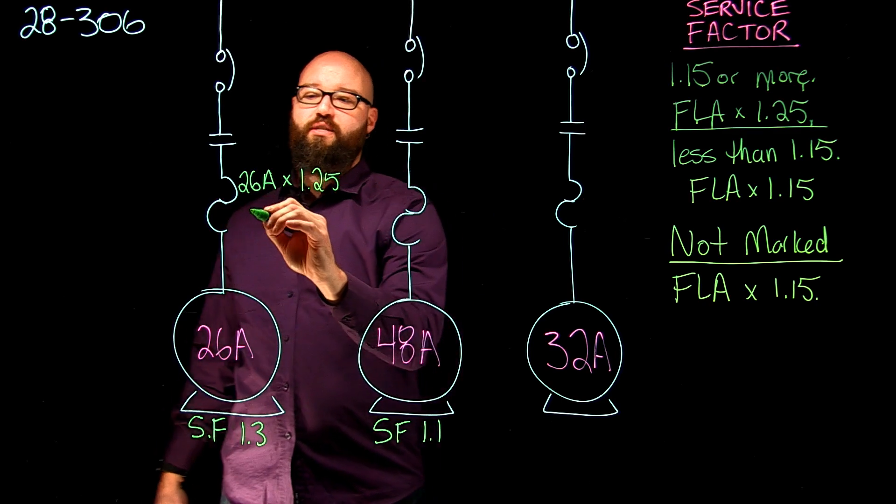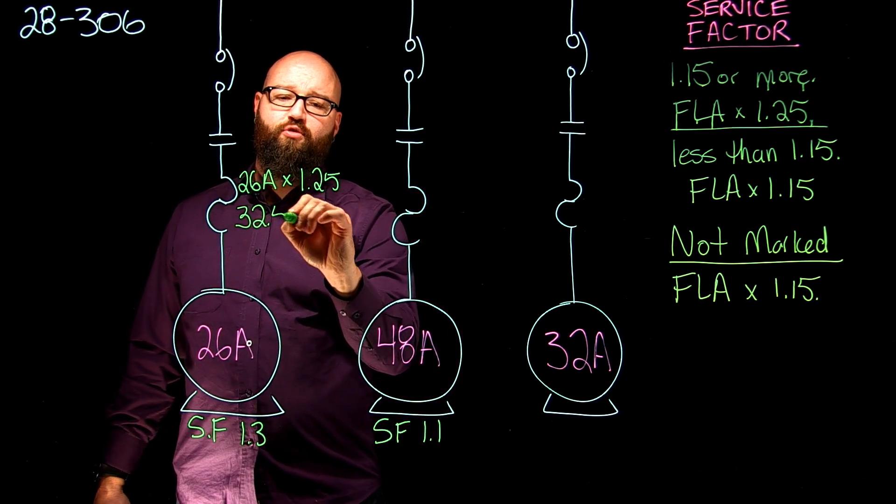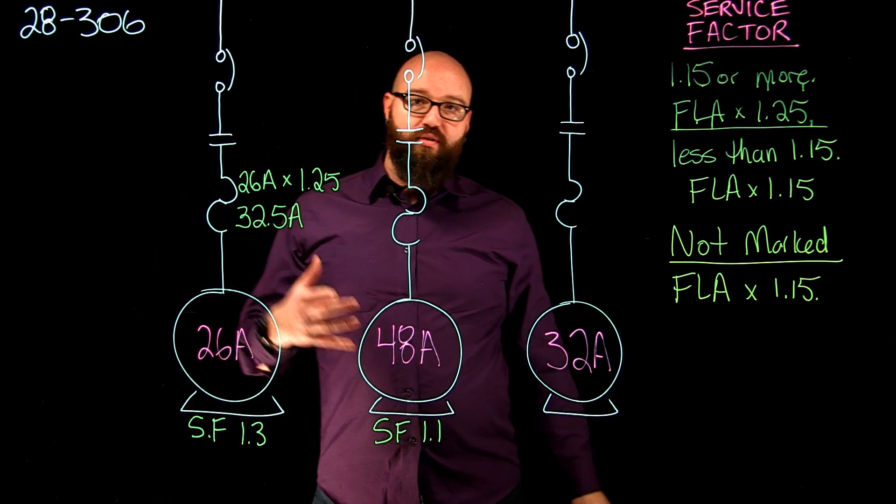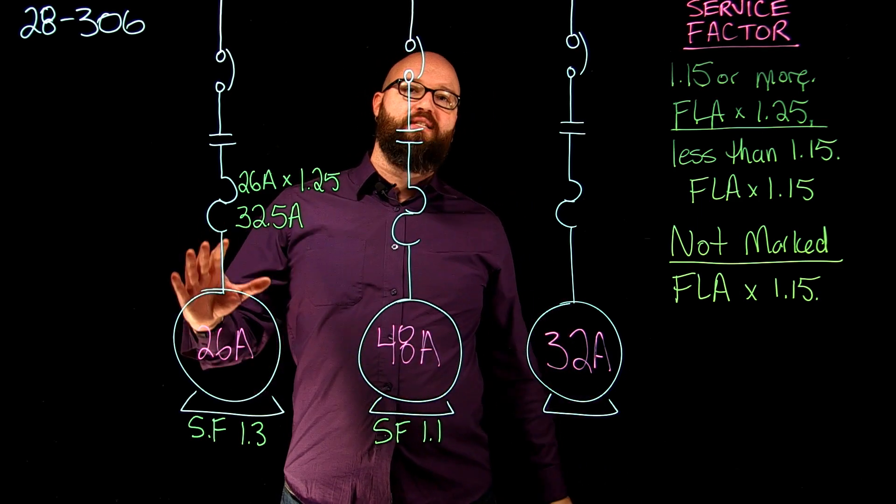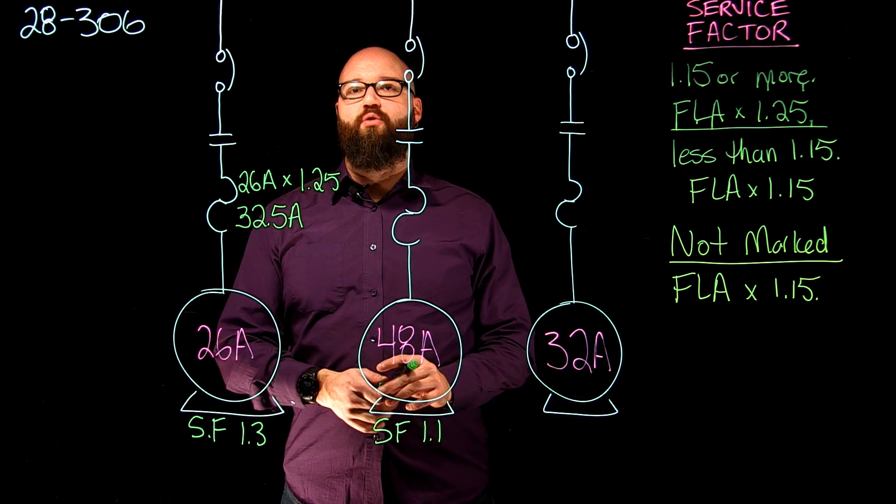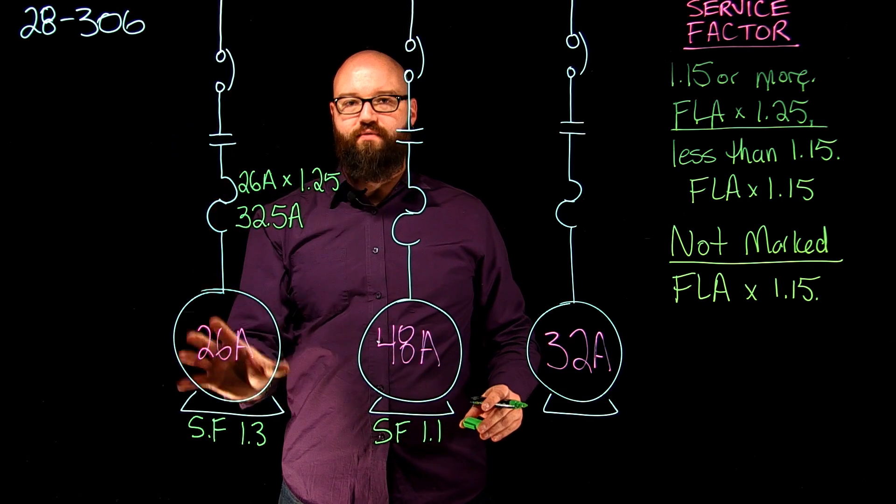Which should give us somewhere around 32.5 amps. And again, if I was able to adjust, this would be the maximum setting or calculated value of our overload device for this first motor.